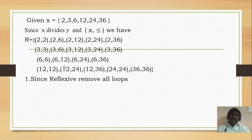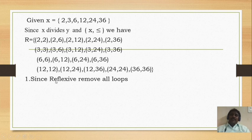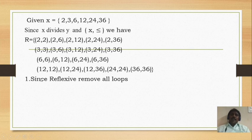First condition of a Hasse diagram: remove all self-loops, that means remove the reflexive pairs — 2,2 and 3,3 and 6,6 and 12,12 and 24,24 and 36,36. Why? Because since it is reflexive — reflexive means removing all the loops. Reflexive means x is related to x: 2 is related to 2, 3 is related to 3, 6 is related to 6, 12 is related to 12, 24 is related to 24, 36 is related to 36. So the first condition is reflexive — we remove all the loops.